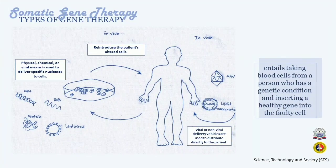Let us now proceed to the types of gene therapy. The two forms of gene therapy treatment are somatic cell gene therapy and germline gene therapy. Somatic cell gene therapy entails taking blood cells from a person who has a genetic condition and inserting a healthy gene into the faulty cell. It centers on the transfer of genetic material or RNA into an appropriate cell type or tissue that affects the cell's gene expression pattern to achieve a therapeutic effect.